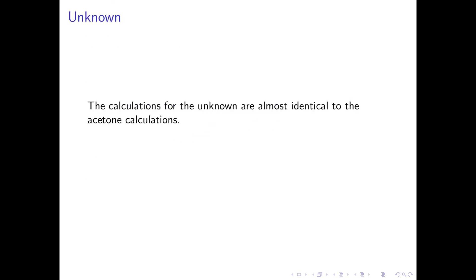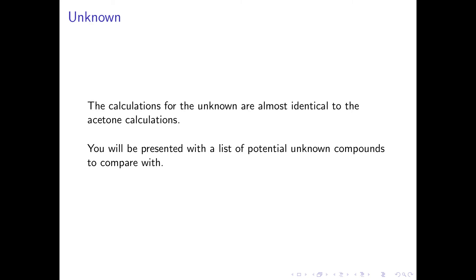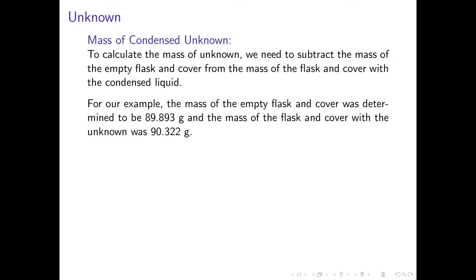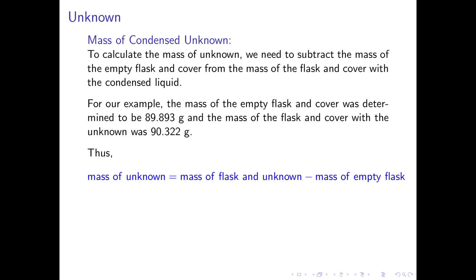We can now turn our attention to the unknown. The calculations for the unknown are almost identical to the acetone calculations. In the report guidelines, you will be presented with a list of potential unknown compounds to compare with. To calculate the mass of the unknown, we subtract the mass of the empty flask with cover from the mass of the flask with cover and the condensed liquid unknown. The mass of the empty flask was 89.893 grams, and the mass of the flask with the unknown was 90.322 grams, giving a mass of 0.429 grams.